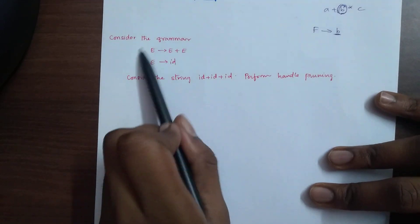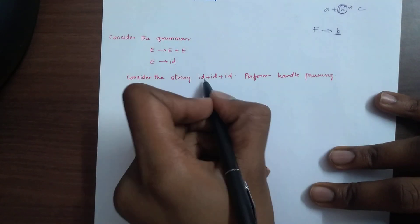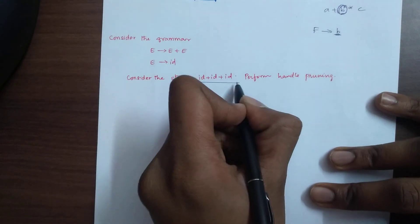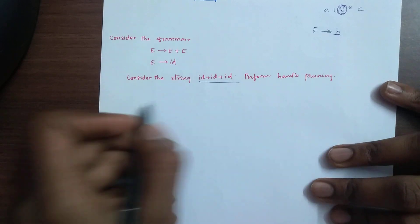Example: Consider the string id plus id plus id. We will perform handle pruning.